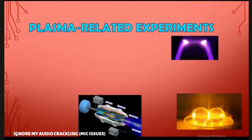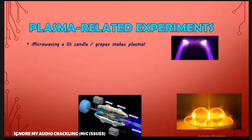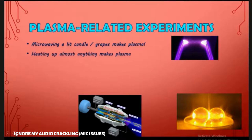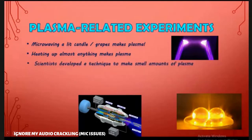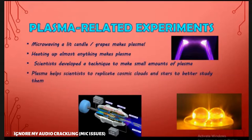Let's do science experiments related to the fourth state of matter. Microwaving a burning candle or grapes makes Plasma — please don't try this at home. Heating up almost anything at a very high temperature can create Plasma. Scientists have actually developed a technique to make small amounts of Plasma for better understanding how the universe was formed.